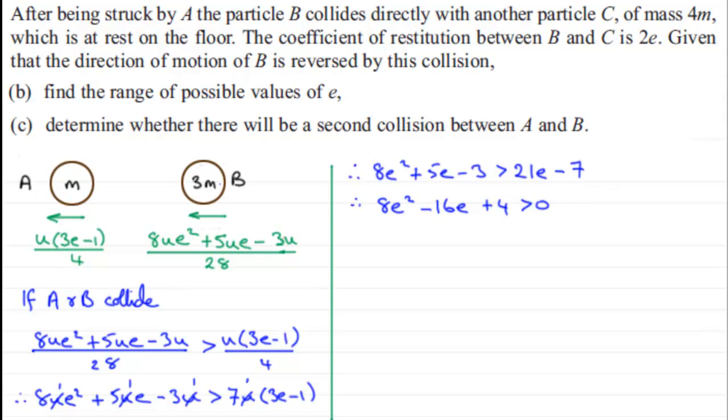And notice that we can now divide each term by 4. If we divide each term by 4, we're therefore going to have 2e squared minus 4e plus 1 is greater than 0.